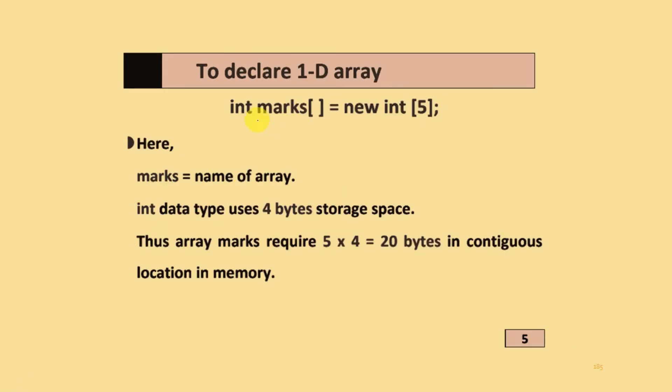To declare one dimension array, you use data type, that is integer, marks in square bracket equals new integer[5]. Here marks is the name of array, and integer is the data type that uses 4 bytes storage space.